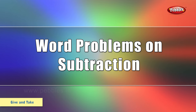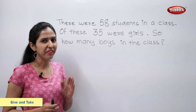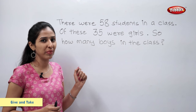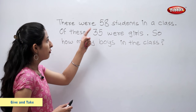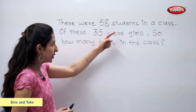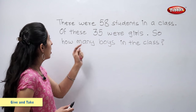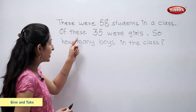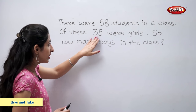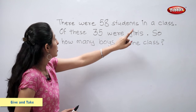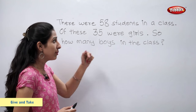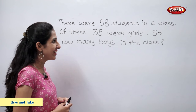Word problems on subtraction. Let's solve this example. There were 58 students in a class. Of these, 35 were girls. So, how many boys are in the class?